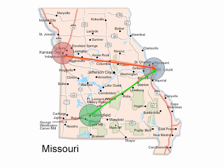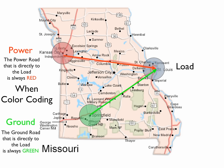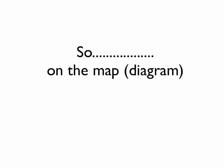Now if this were an electrical map, this would be the power side and this would be the ground side. And St. Louis would be the load. When you're color coding, the power road that is directly to the load is always colored red. And the ground road that is directly to the load is always colored green. That's true on our electrical diagrams.